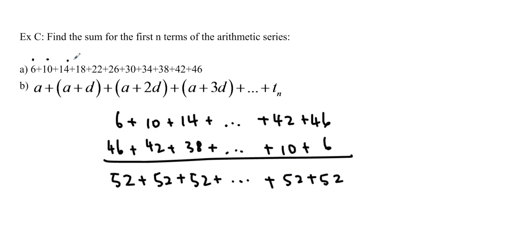Plus 52. And you can just count how many terms there are. There's 1, 2, 3, 4, 5, 6, 7, 8, 9, 10, 11 terms. So the sum of all of these numbers, 6 plus 10 plus 14 and so forth, plus 46 is our last term, is equal to 52 times 11 divided by 2, which, if you use your calculator, should give you 286.